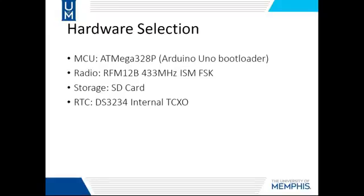The hardware that has been selected for this project is listed now. I have selected the ATmega328P microcontroller from Atmel, flashed with the Arduino bootloader, in order to operate the nodes. This is the same chip that is used on the Arduino Uno; however, I will not be using the Arduino platform for this project. The radio module that will be used is the RFM12B from HopeRF, which operates in the 433 MHz range of the ISM band, so that no license is required.